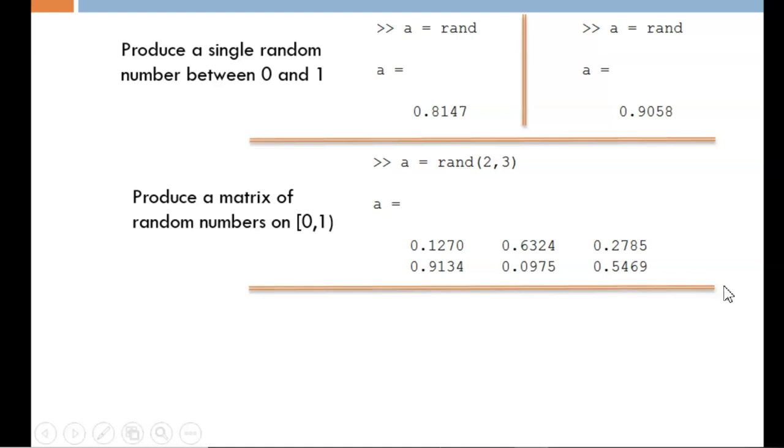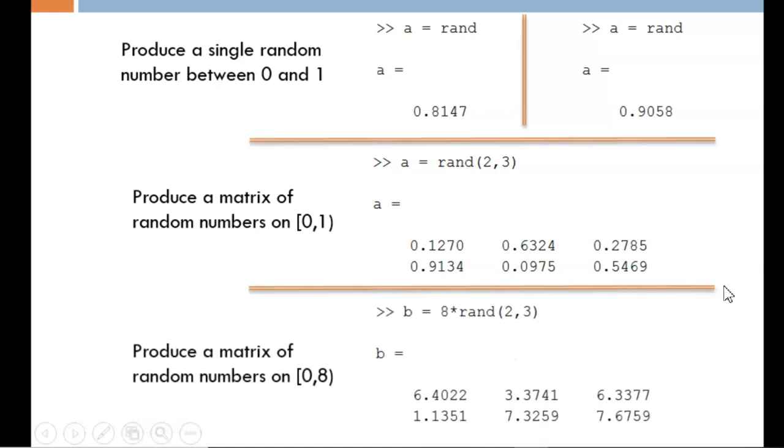What if we want random numbers on a different interval? We transform the output of the base RAND function. In this example, the goal is to obtain random numbers between 0 and 8. The output of the RAND function produces numbers between 0 and 1, so we multiply all of those numbers by 8 to scale them up.